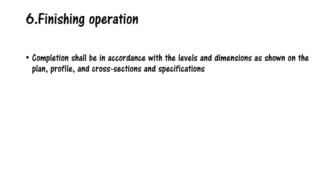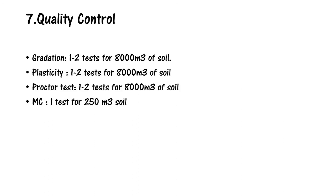For quality control during the entire process: gradation testing — one to two tests required for every 8,000 cubic meters of soil; plasticity testing — one to two tests for every 8,000 cubic meters; Proctor test — one to two tests for every 8,000 cubic meters. Nuclear density testing is common for determining dry density and verifying compaction requirements.